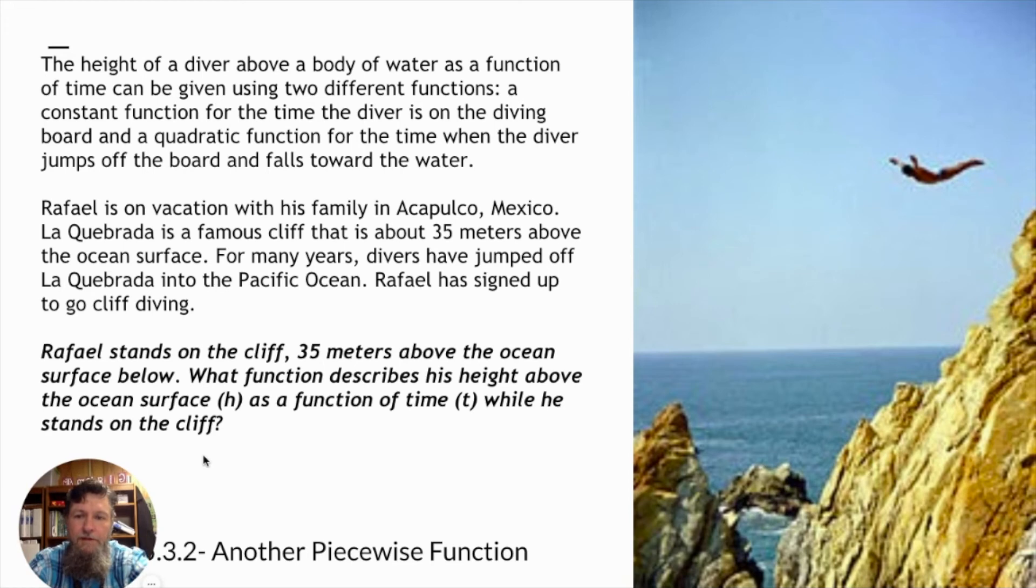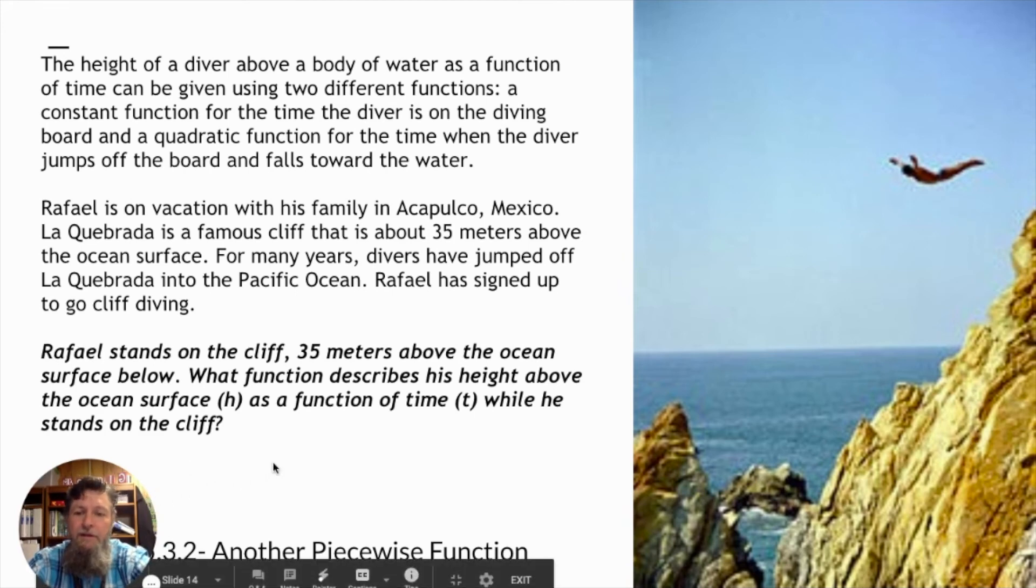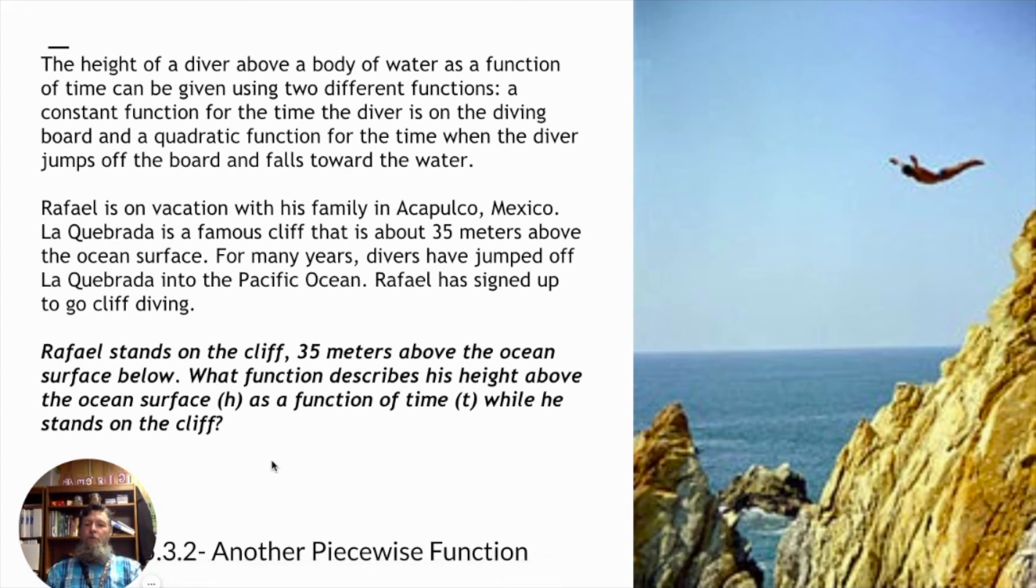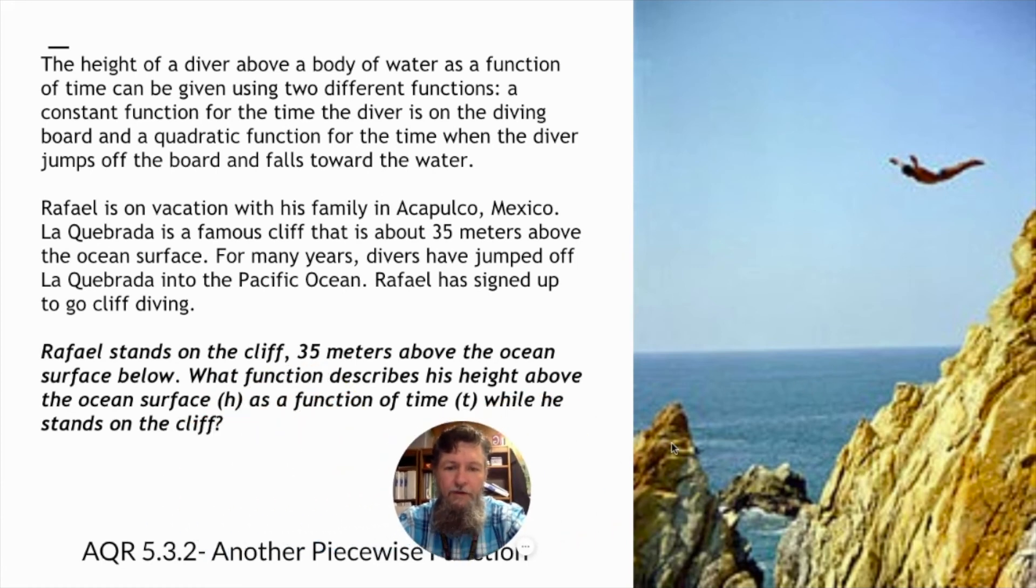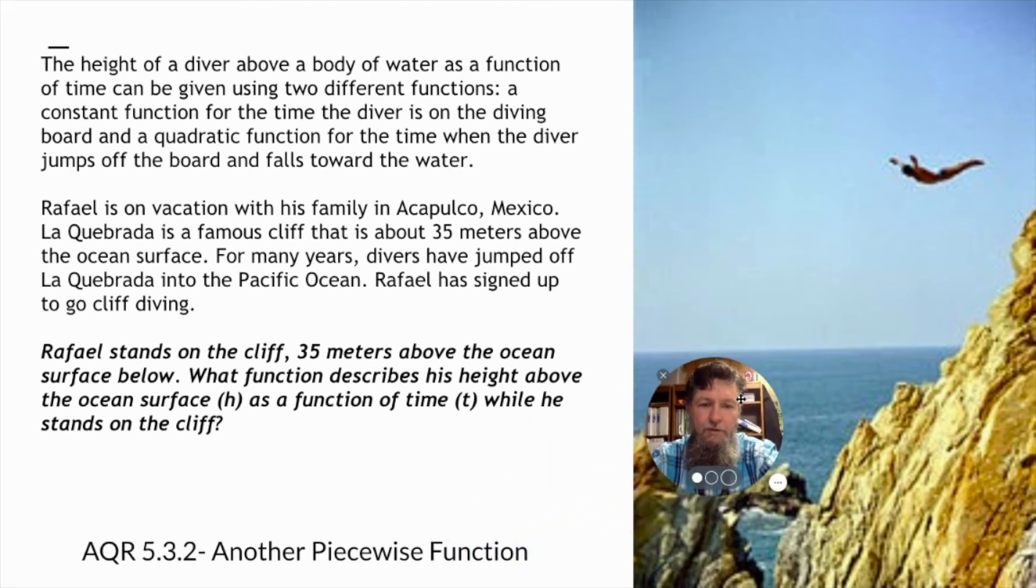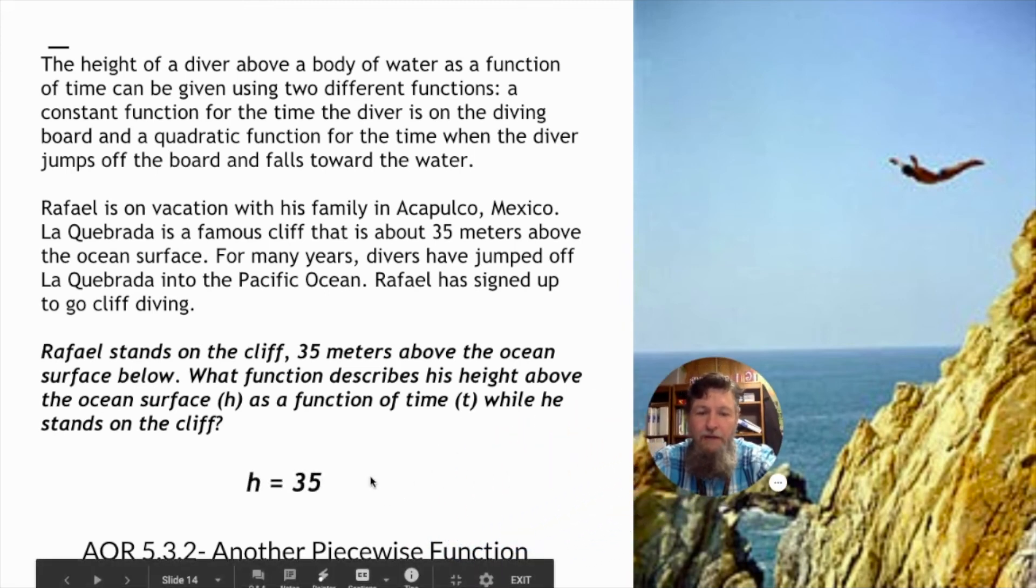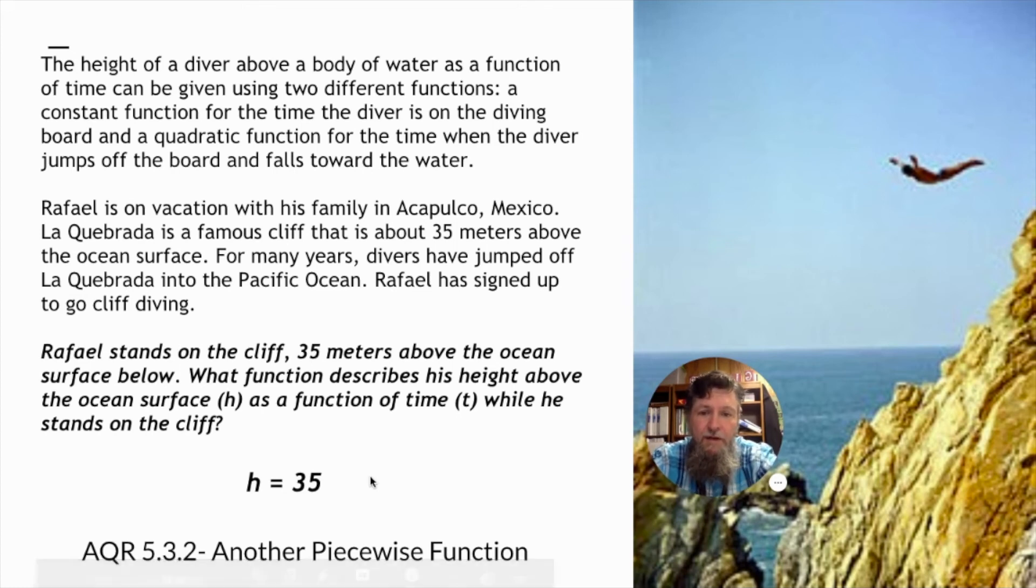Rafael is on vacation with his family in Acapulco, Mexico. La Quebrada is a famous cliff that is about 35 meters above the ocean surface. And for many years, divers have jumped off La Quebrada into the Pacific Ocean. Rafael signed up to go cliff diving. He stands on the cliff 35 meters above the ocean surface below. What function describes his height above the ocean surface, H, as a function of time while he stands on the cliff. H equals 35. That's exactly it. He's 35 meters above the surface of the ocean, so that's exactly where he's going to be.